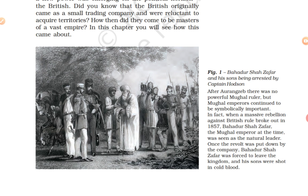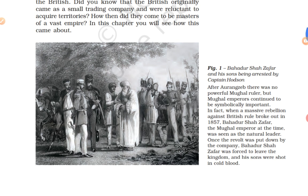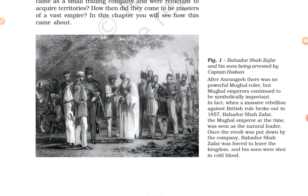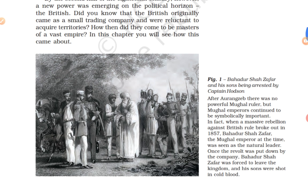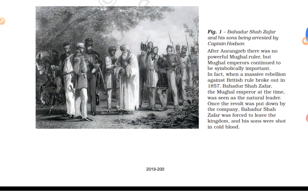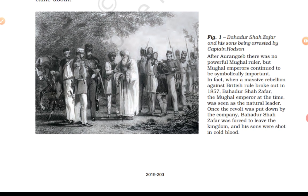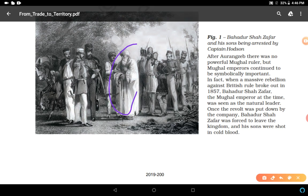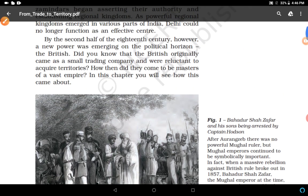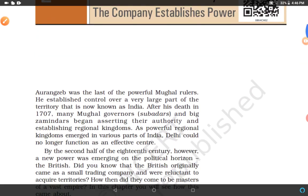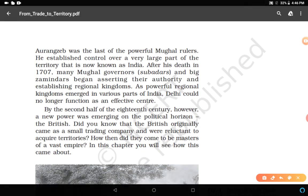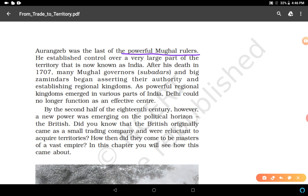Captain Hudson was a British leader who led the British army in the 1857 revolution and arrested Bahadur Shah Zafar the Second. He was the last Mughal emperor. In the previous chapter we discussed Aurangzeb, who was the last powerful Mughal ruler.